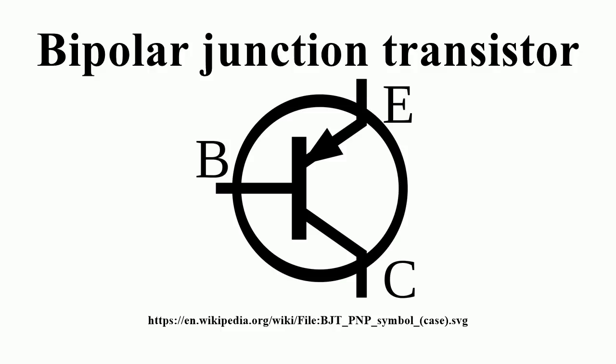The arrows in the NPN and PNP transistor symbols are on the emitter legs and point in the direction of the conventional current flow when the device is in forward active mode. A mnemonic device for the PNP transistor symbol is 'pointing in', based on the arrows in the symbol and the letters in the name.